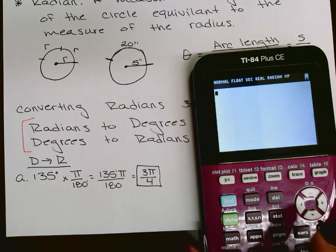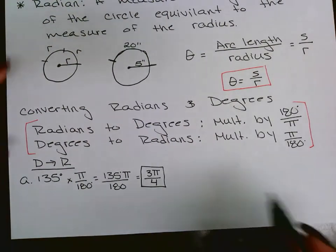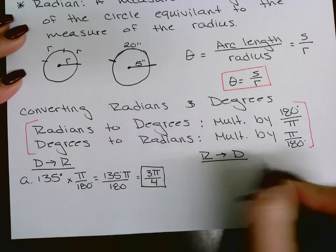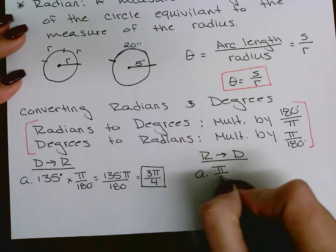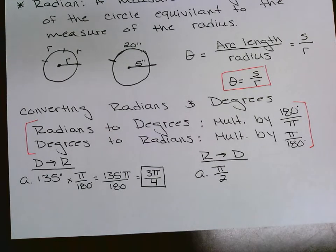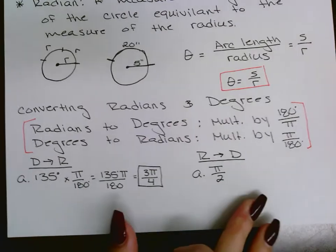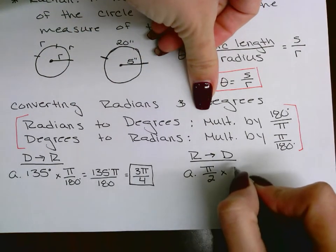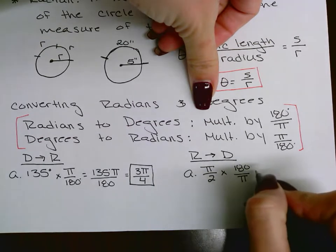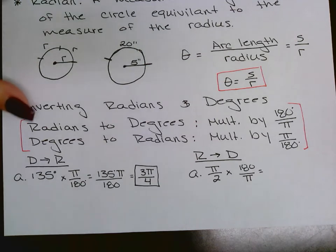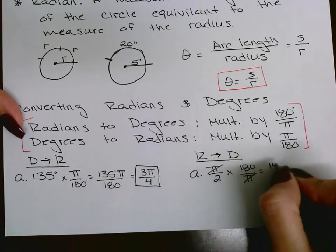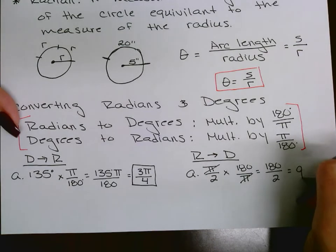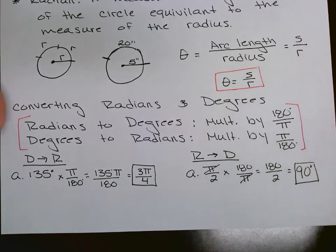Now converting radians to degrees. We already know from the unit circle that pi over 2 is 90 degrees, but let's see why. When converting radians to degrees, multiply by 180 over pi. The two pi's cancel, and I'm left with 180 over 2. Half of 180 is 90 — that's your answer. For more complicated ones, use your calculator.